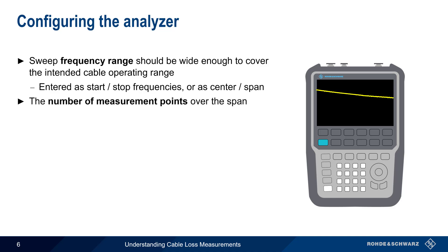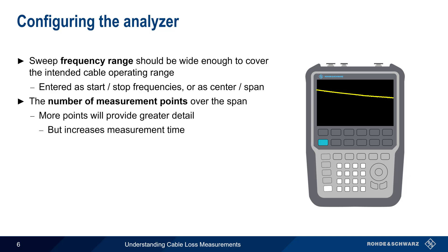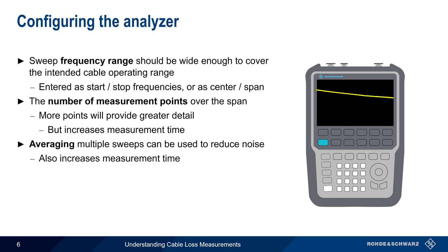Another important parameter is the number of measurement points over this span. Increasing this number will provide greater detail, but more frequency points will also increase the amount of time needed to make a single sweep. Averaging multiple frequency sweeps can be used to reduce noise and obtain a more accurate result, especially for cables with very high loss. Note however that increasing the number of sweeps will also increase the overall measurement time.